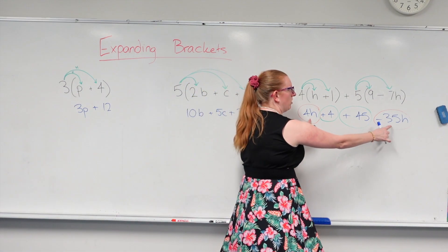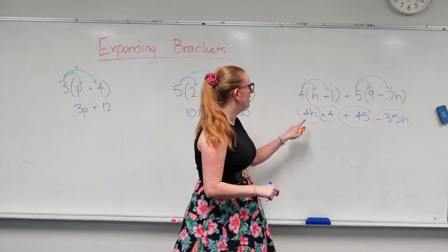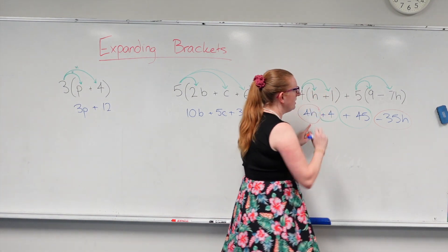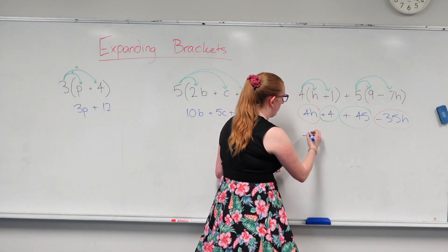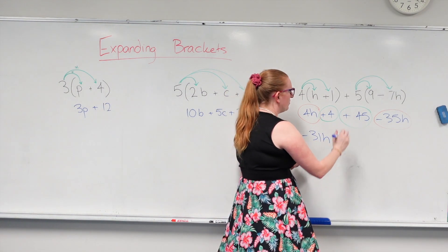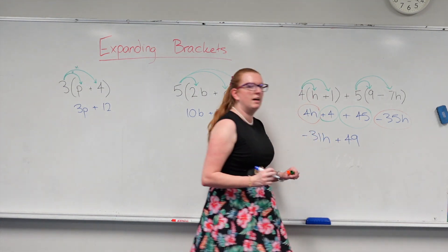So now I can only put the orange ones together because they're like terms. They've both got a h on it. So 4h minus 35h will give us negative 31h. And then let's do the green one. So I've got 4 plus 45 gives me 49. So plus 49. There we go.